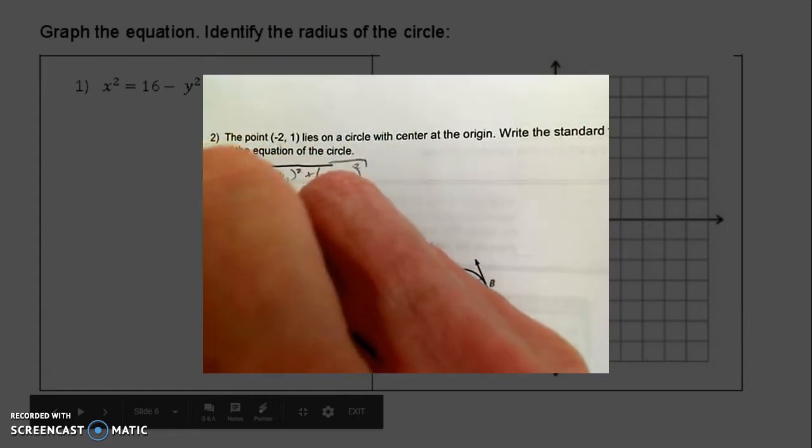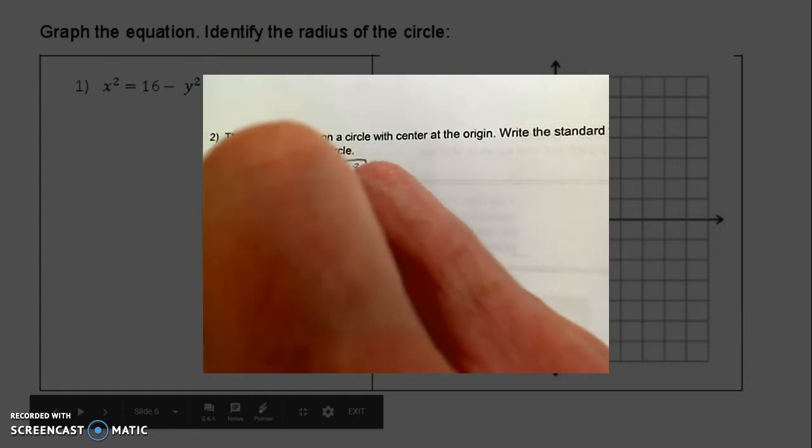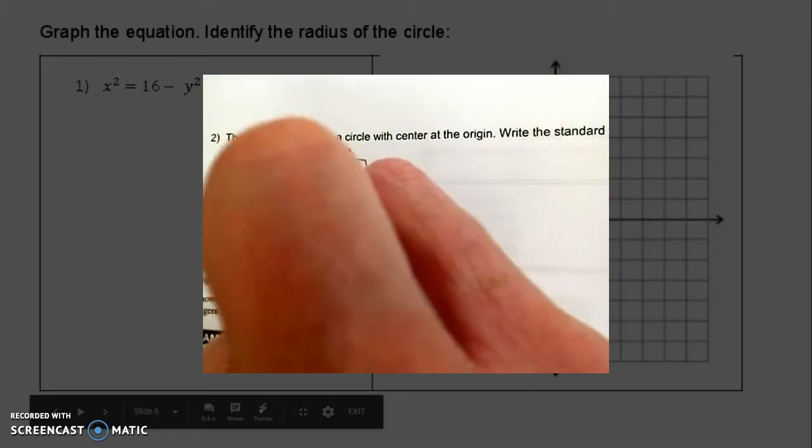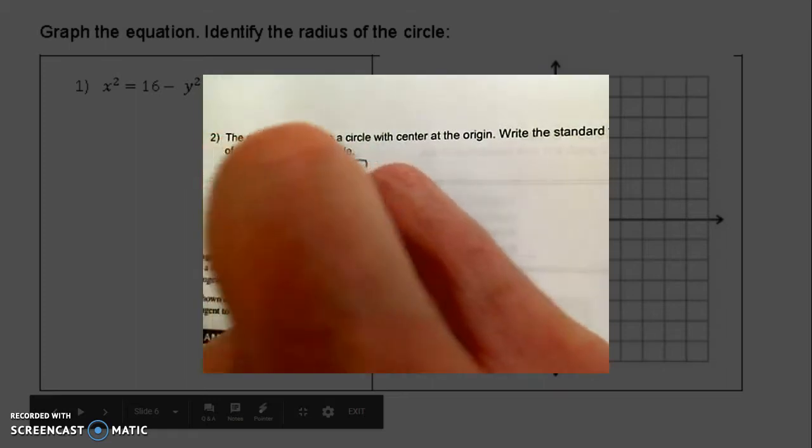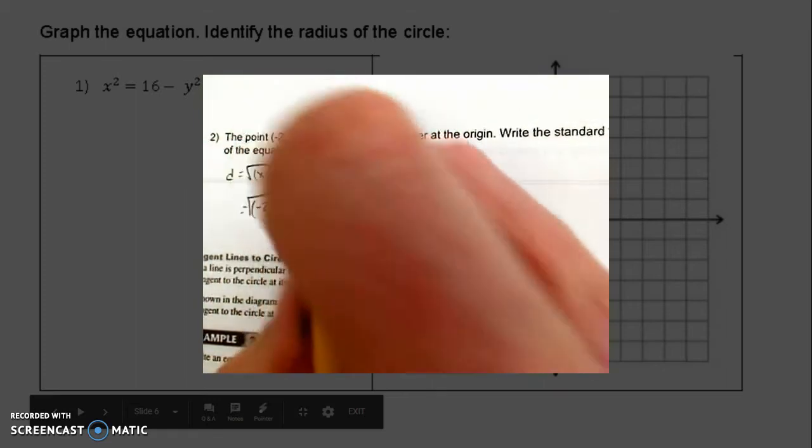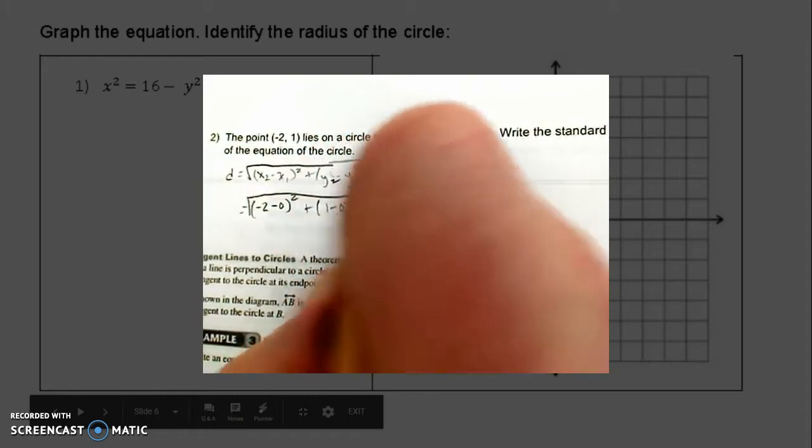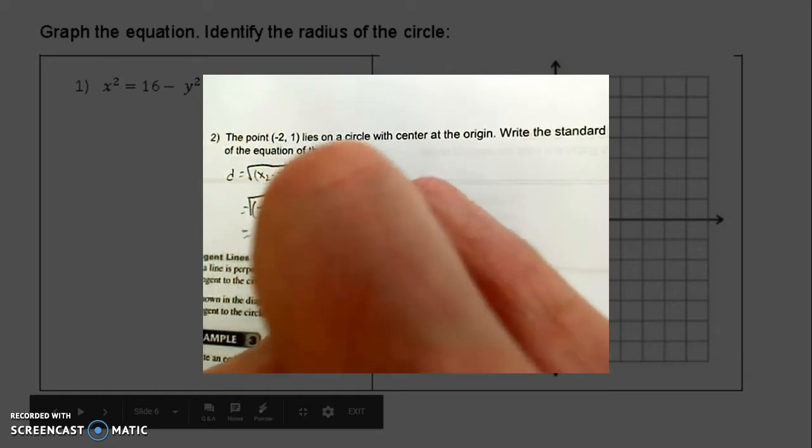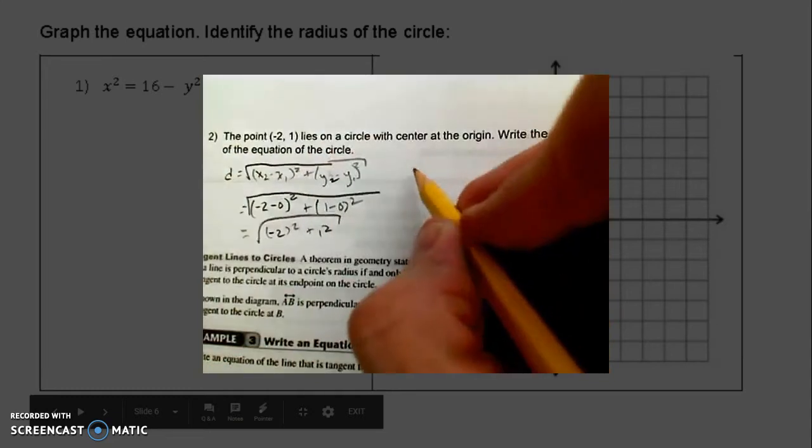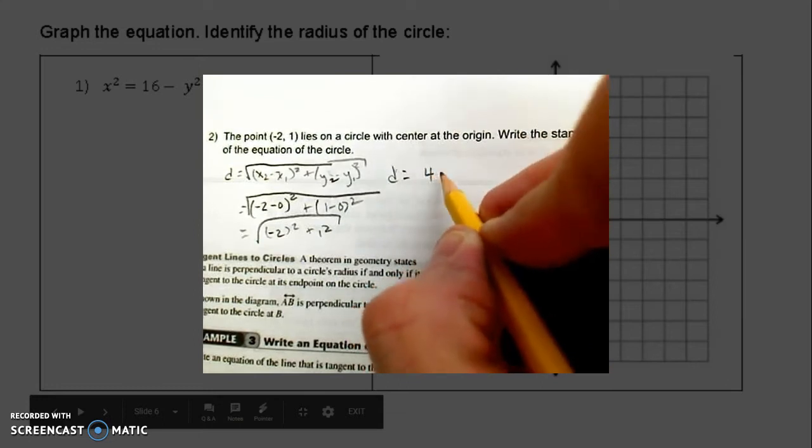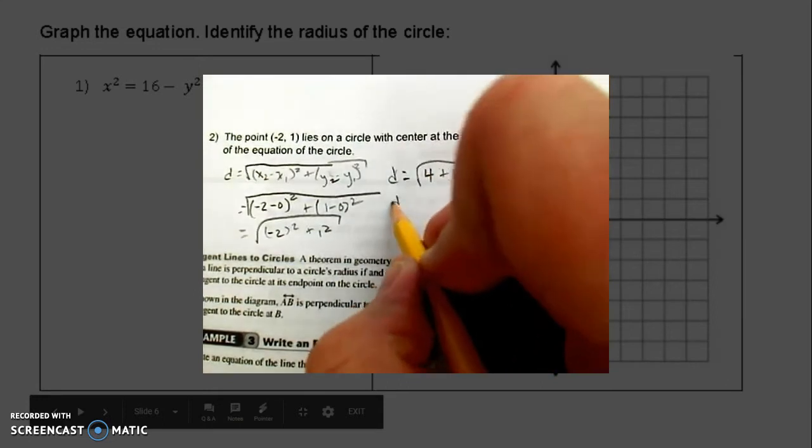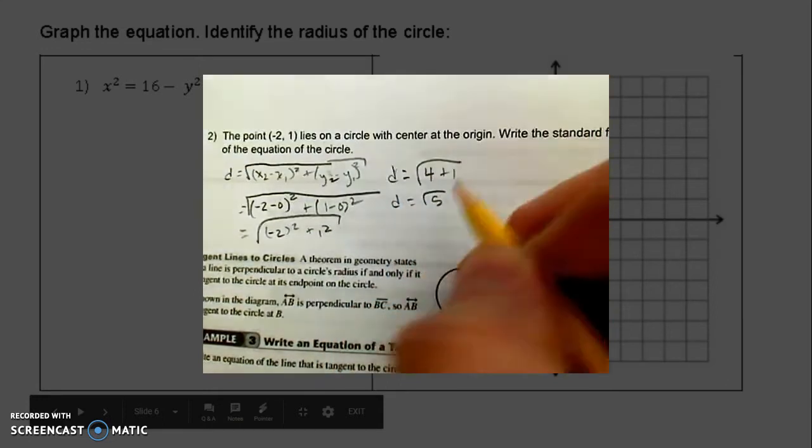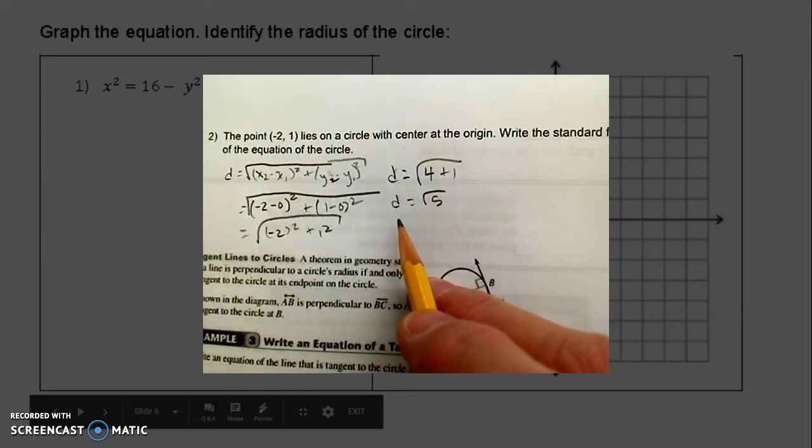My x₂ is -2, and my x₁ is 0, because it's centered at the origin. Similarly, 1 - 0, square it. So I'm going to have (-2)² + 1² = 4 + 1 = √5. So my radius is the square root of 5.